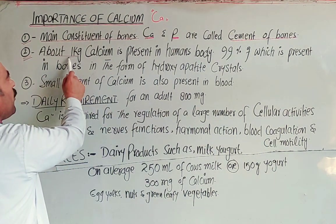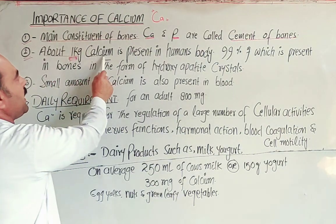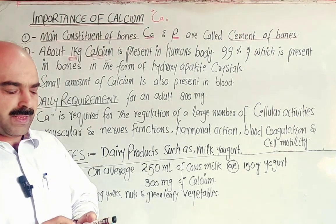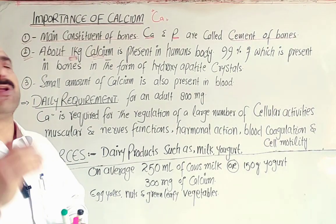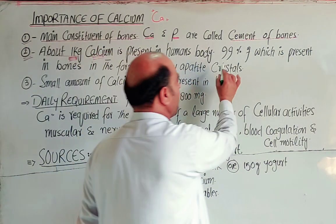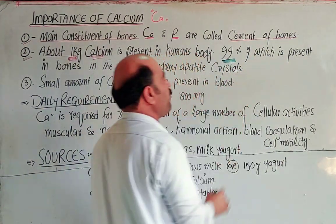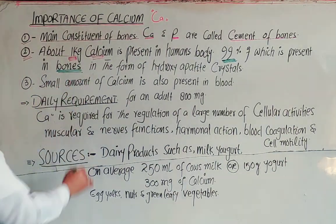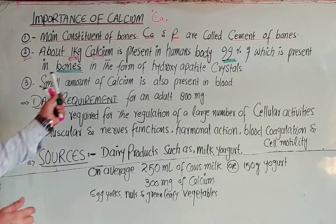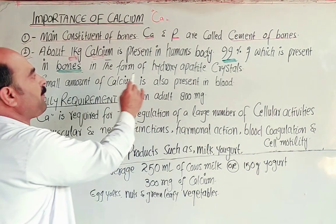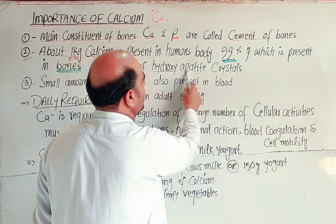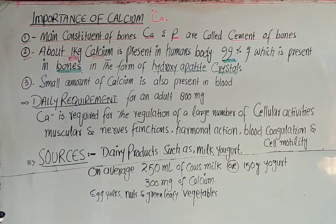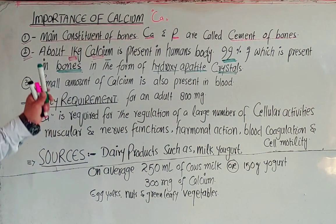Students, approximately one kilogram of calcium is present in the human body in total. Ninety-nine percent of this one kilogram is present in the bones and teeth in the form of hydroxyapatite crystals. This means calcium is fundamentally related to and important for bones.